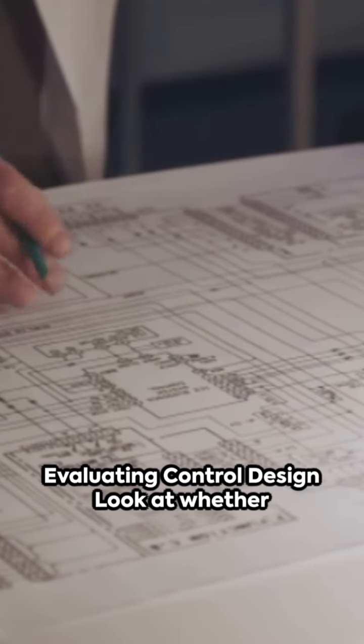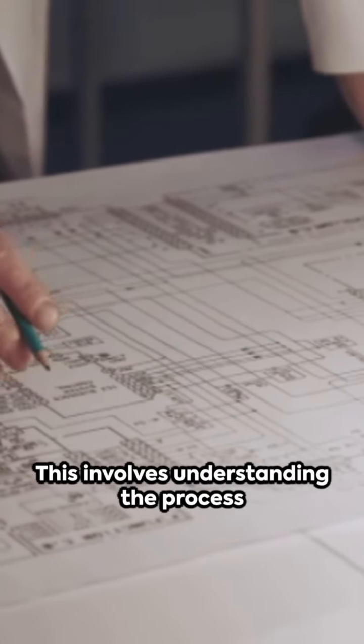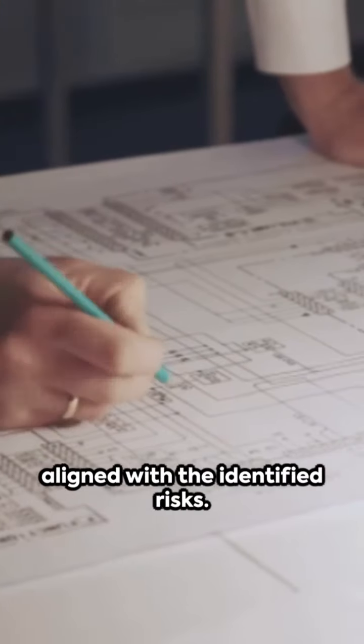Evaluating control design. Look at whether the controls are properly designed to address specific risks. This involves understanding the process flow and checking if the controls are aligned with the identified risks.